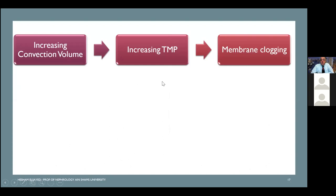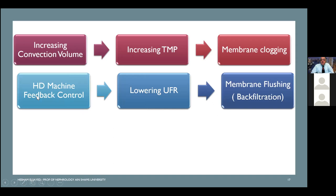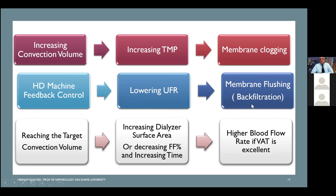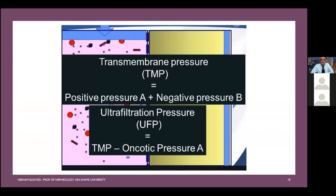Increasing the convection volume increases trans-membrane pressure, which may affect membrane deposition. Hemodialysis machines have a feedback control: if membrane fouling or protein deposition occurs, the machine automatically decreases ultrafiltration — this is called packed filtration. To reach the target convection volume, you can increase dialyzer surface area, filtration fraction, session time, or blood flow rate via vascular access. Trans-membrane pressure applied to the dialyzer membrane depends on the ultrafiltration target — minimal in high-flux but very high in hemodiafiltration.